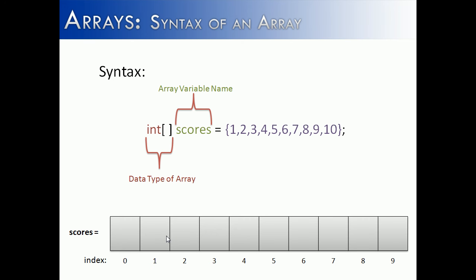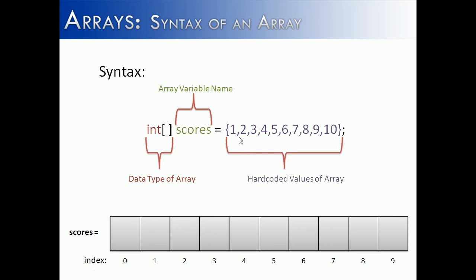The last syntax is not the only way to construct an array. You can see from this slide that the front end is exactly the same — you have the data type, the brackets, and the variable name. What's different is the right-hand side, which includes hard-coded values. Notice that you start with a curly brace and end with a curly brace — these are not parentheses and these are not brackets.